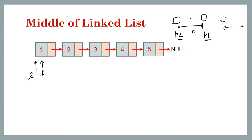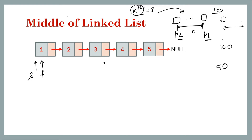In this case we also have two pointers but we move them differently. The goal is to find the middle node — we don't know its position. For the kth-node problem, k was fixed regardless of list length, so we advanced one pointer by k steps. But for the middle, the target node changes depending on length: with 10 nodes it's roughly the 5th, with 100 nodes roughly the 50th.